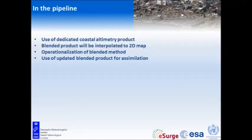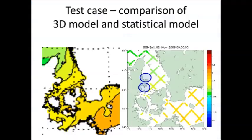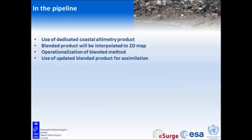In the pipeline we are planning to use a more dedicated coastal altimetry product — the Alice product and also the Pistache product — to get closer to the coast. If we use a dedicated product, we can actually get data from areas and get closer to the coast than currently possible.